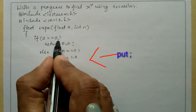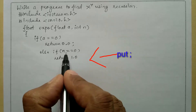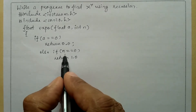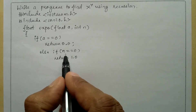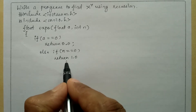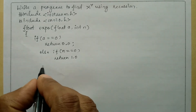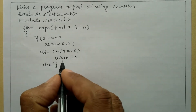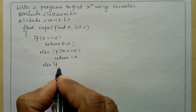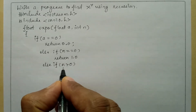Else if n is equal to zero, then it returns one point zero. Here a is the base — if base is zero it returns zero. And n is the exponent — if the exponent is zero, anything raised to zero is one, so that's why we return one point zero. If this is also not true, we check the next condition.